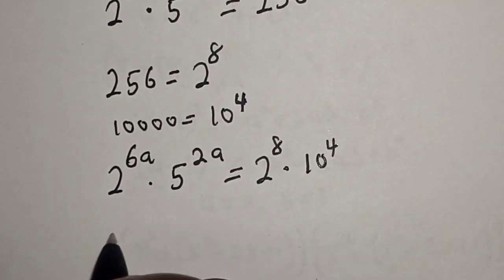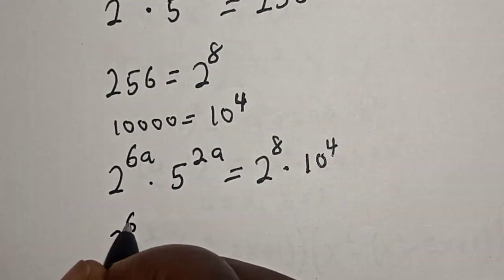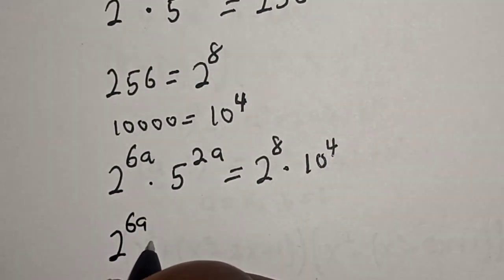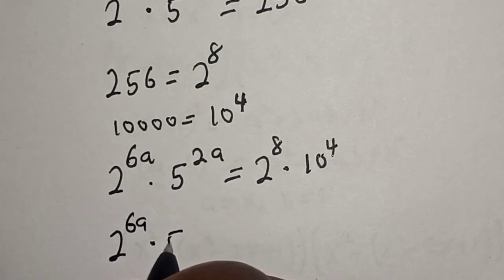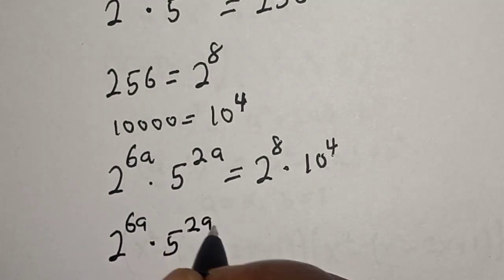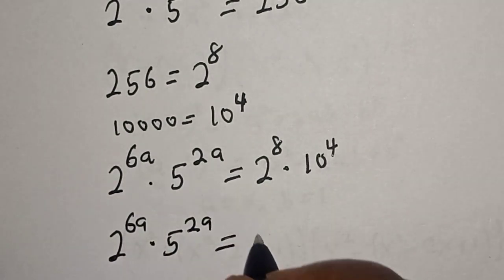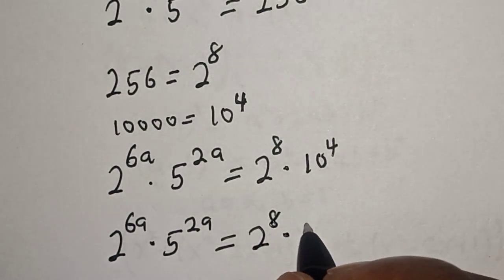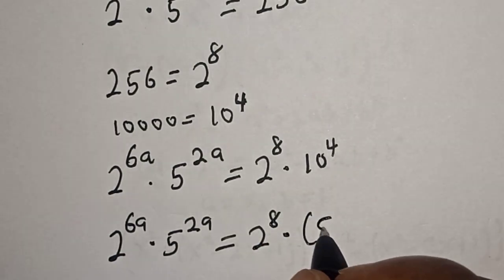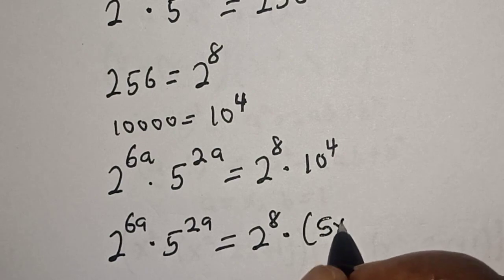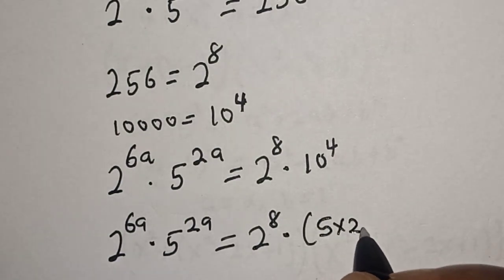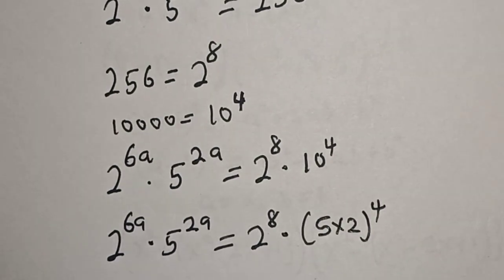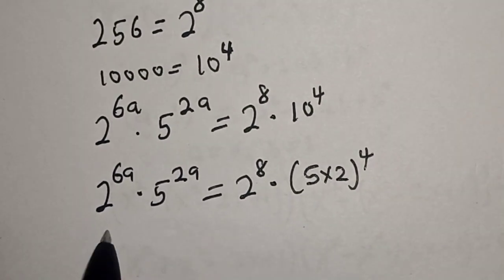This gives us 2 raised to power 6a multiplied by 5 to the power of 2a is equal to 2 raised to power 8 multiplied by 10, which can be written as 5 times 2, to the power of 4.